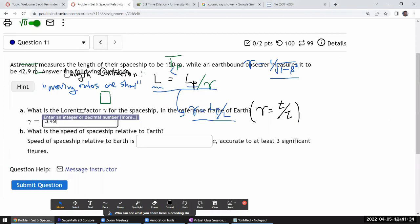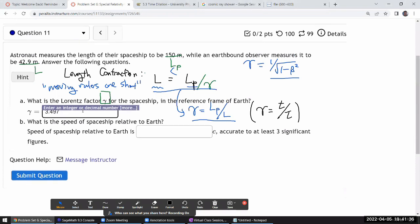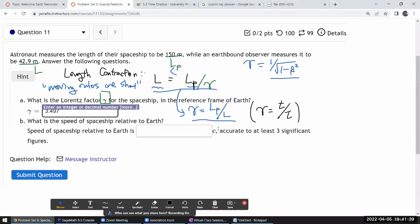So gamma is 3.497. And just keeping some extra significant figures for which I'll explain in a little bit.